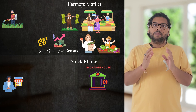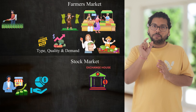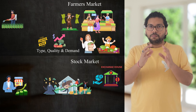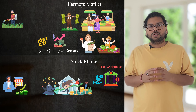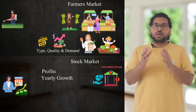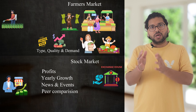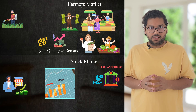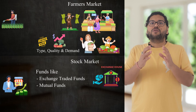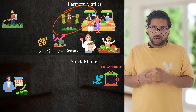Similarly, the stock market is also an auction market where company owners are like farmers — they produce profit by running the company and sell the company's shares, a pie of their profit, to raise money from the public. People like you and me and qualified institutions are the buyers. We can buy and hold these shares or resell them for a higher profit when the price goes up, depending on the company's profit, year-on-year growth, demand, and peer comparison. You can also buy commodities like gold, silver, or crude oil, or funds like ETFs or mutual funds from the stock market.